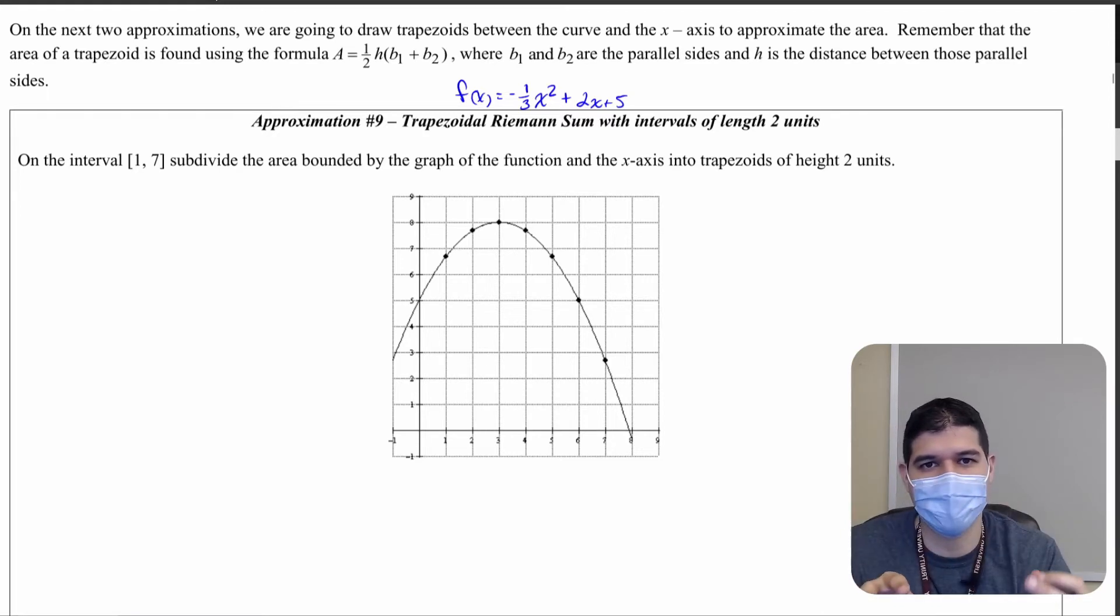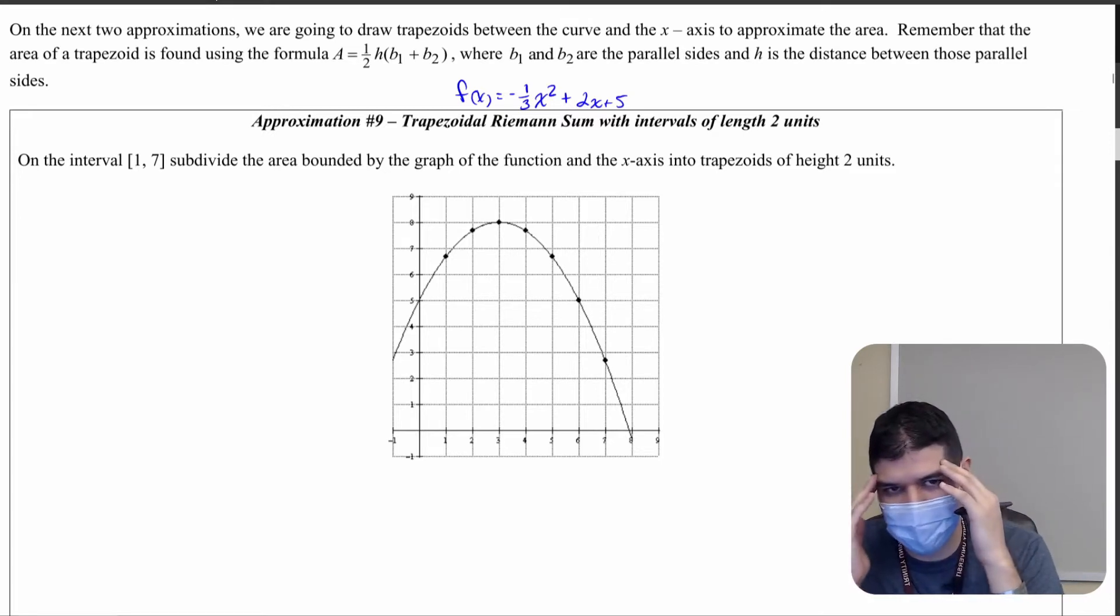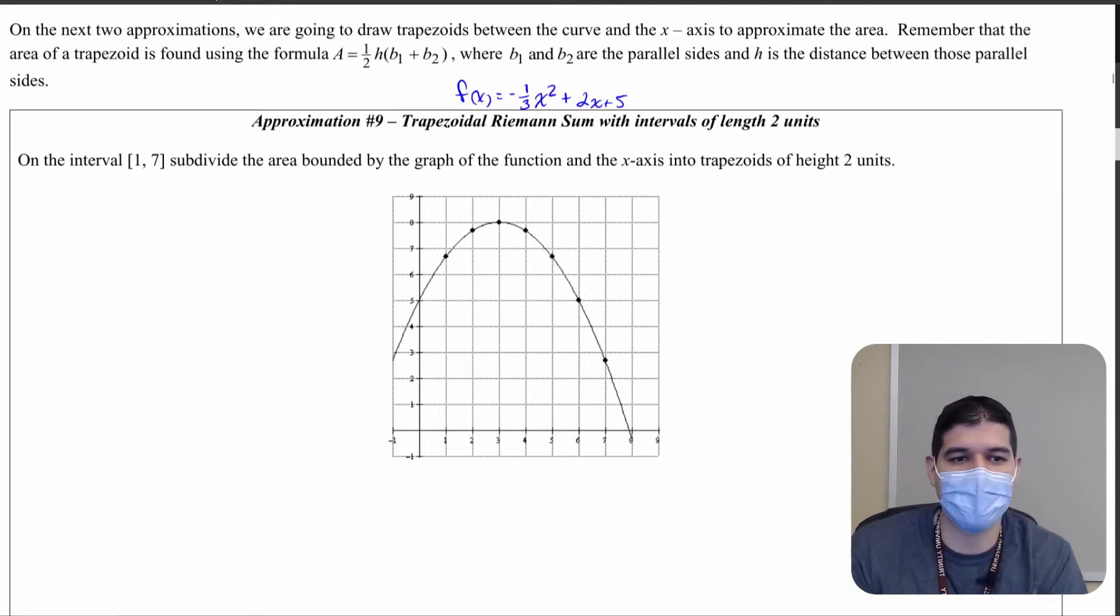Trapezoidal Riemann sums come up on calculus AP exams every once in a while, probably once every four or five years, and so a lot of students don't actually spend the time to work on trapezoidal sums. But that's not going to be you guys. You guys are the best of the best students and you're actually going to know what the formula for trapezoid is and how to use it.